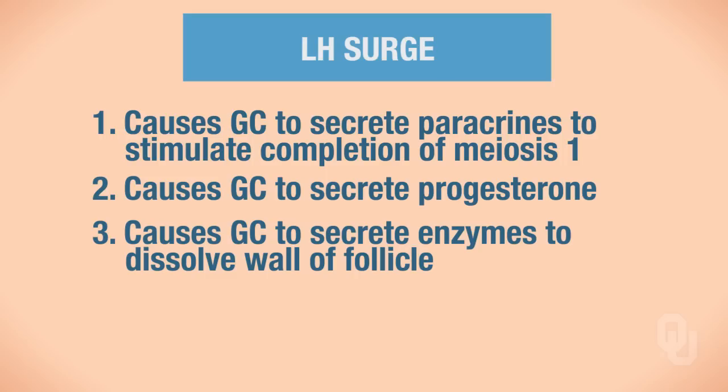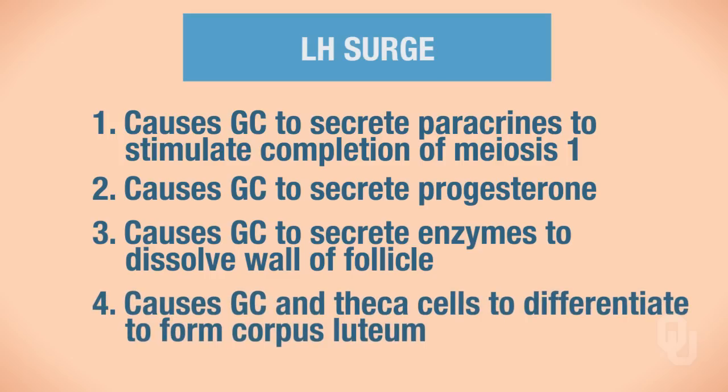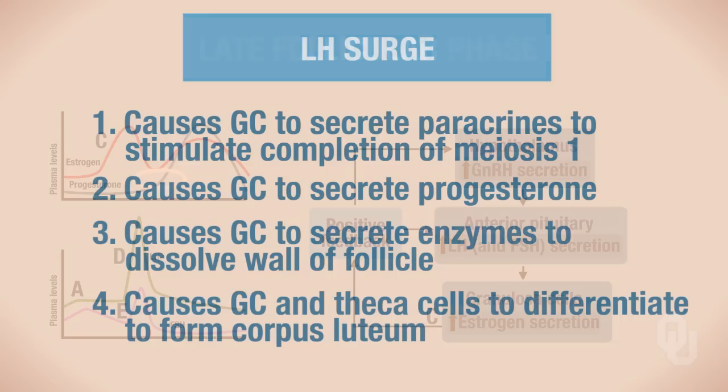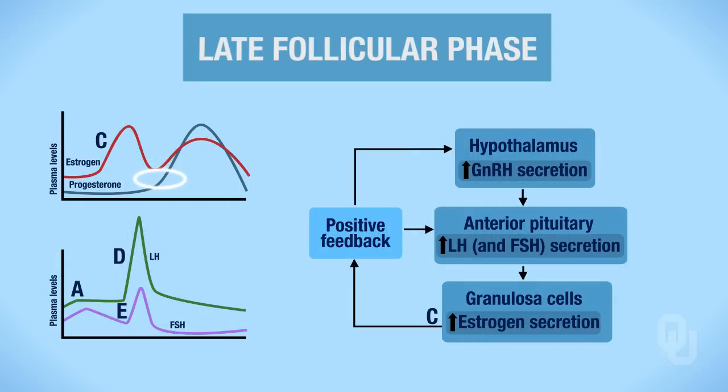Lastly, the fourth function of this LH surge is that it's going to cause the granulosa cells and the thecal cells to differentiate and form the corpus luteum. Those are the four functions of LH, and remember these are only occurring during the LH surge represented as the letter D on your diagram.